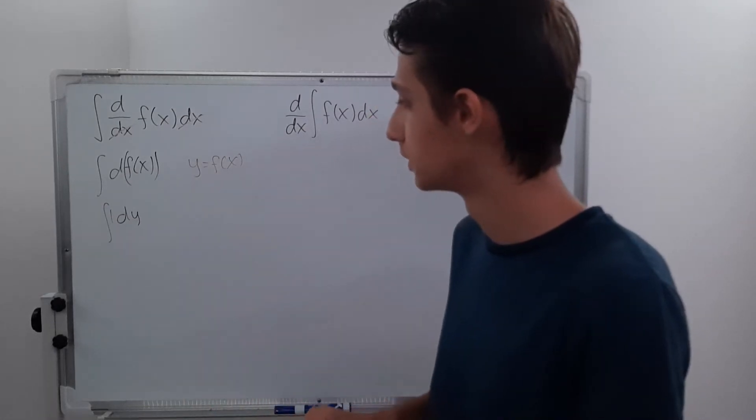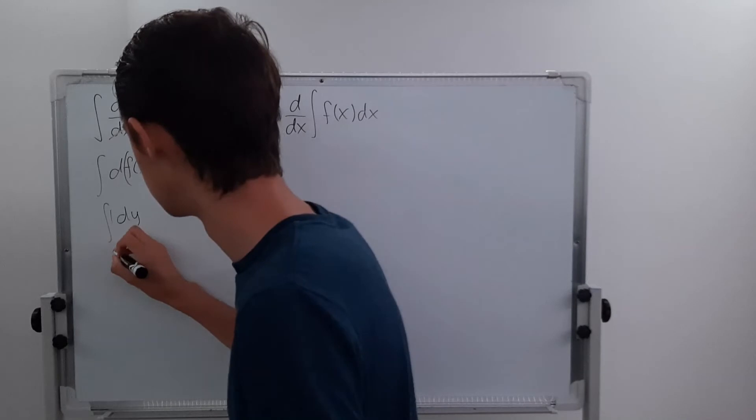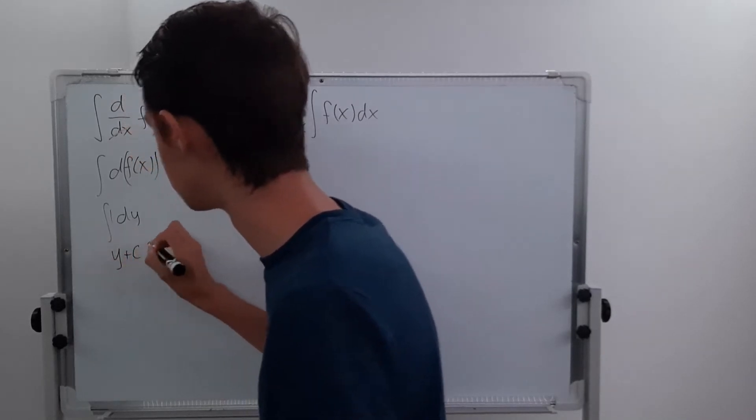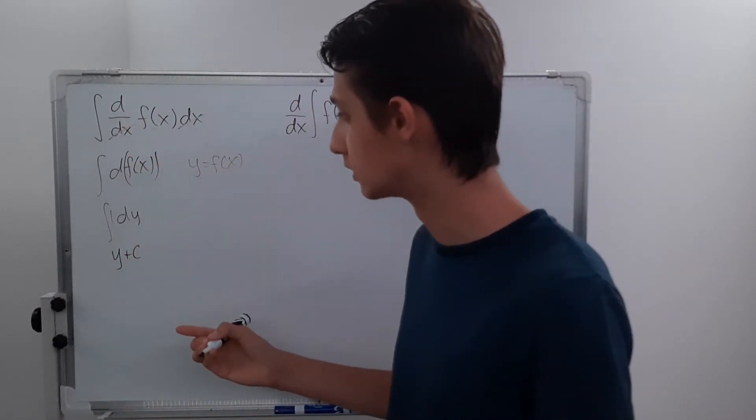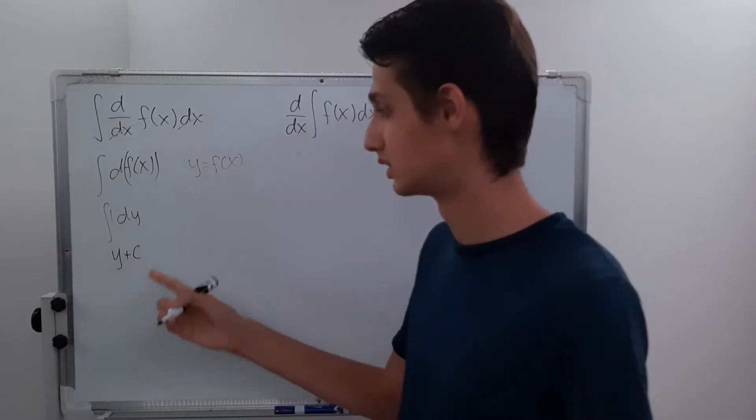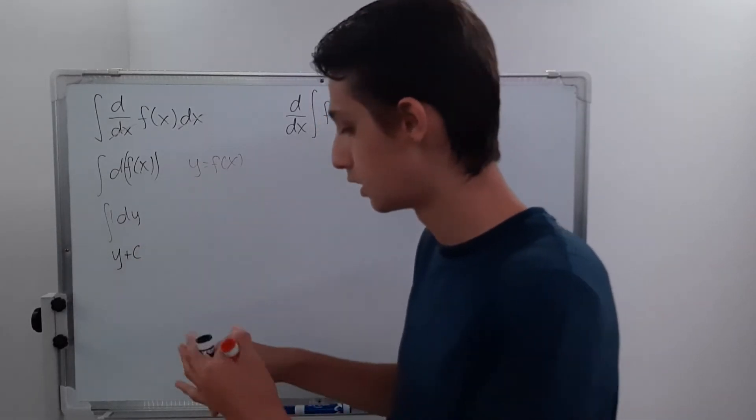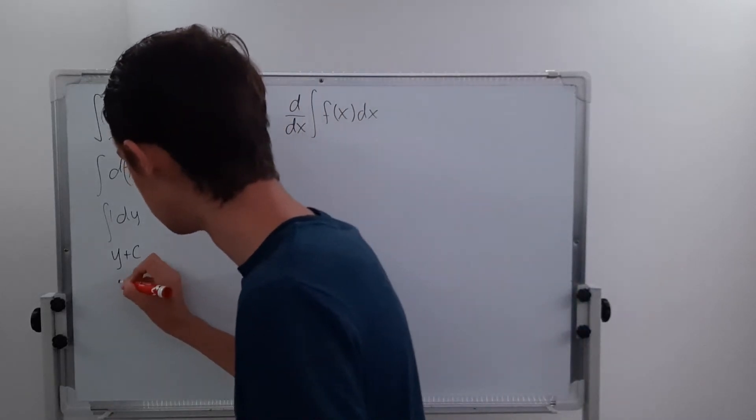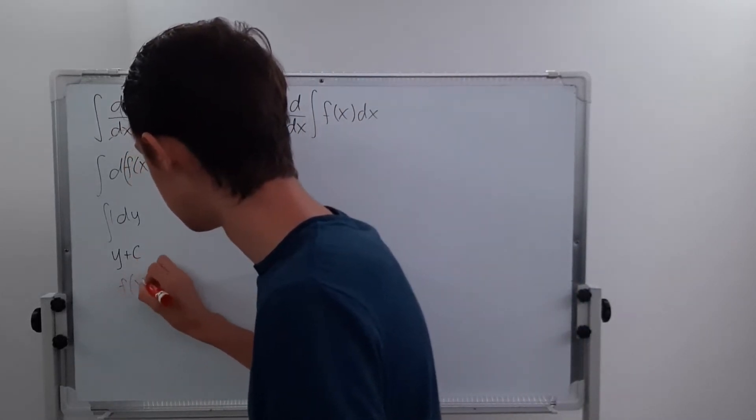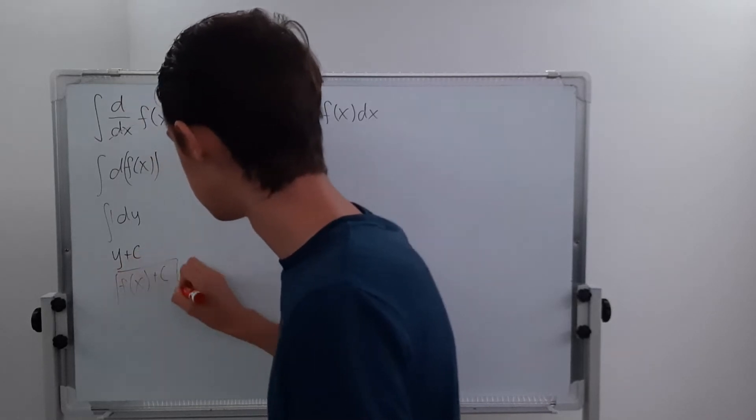Well, that's just y. Oh, plus c, remember, plus c. That's just y plus c, right? Because if you're integrating one, it's just going to be whatever you have here. So you can replace this with f of x. So it's just going to be f of x plus c. That's your answer.